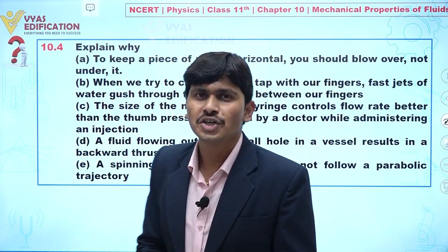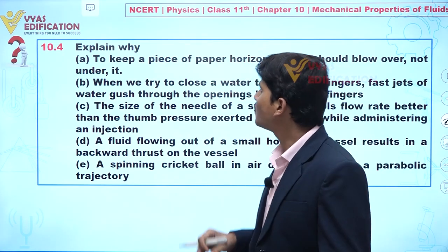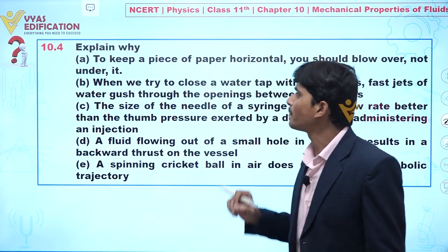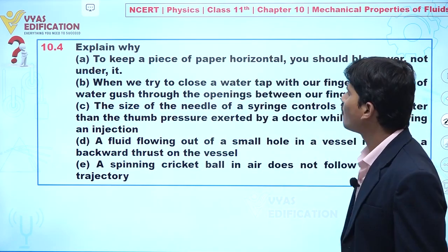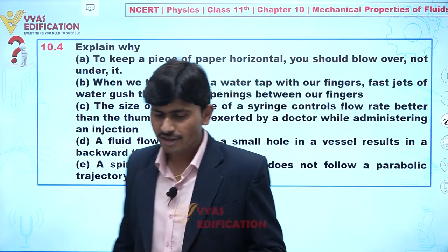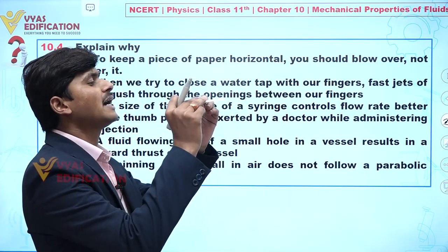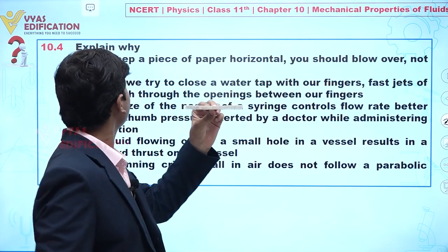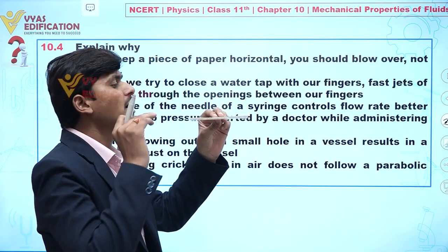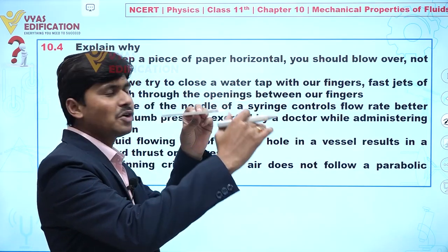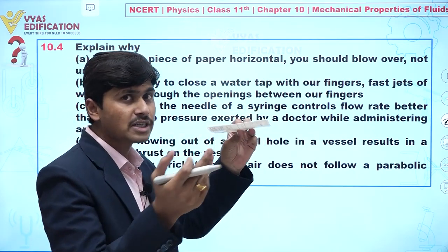We are going to discuss question number 10.4. In this question it is given: explain why, to keep a piece of paper horizontal, you should blow over it, not under it. Let's try to understand this situation using this paper. Suppose I am holding this paper and I want to keep it horizontal — should I blow air above or below the paper?